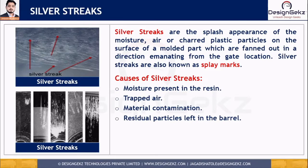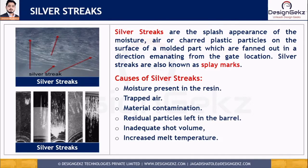Silver streaks or splay marks can also be caused by inadequate shot volume. If the shot size is below 20 percent of the machine injection capacity — especially for temperature-sensitive materials like LDPE or HDPE — the melt resin will remain in the barrel too long and begin to degrade. Additionally, increased melt temperature, increased injection speed, and increased pressure will also cause splay marks.